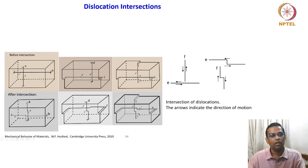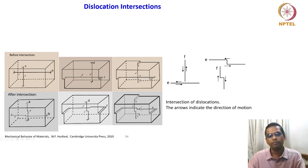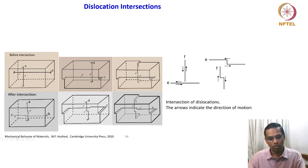This is before intersection and this is after intersection. As the intersection proceeds, you see that the jog created on E and F are shown here. They are not similar to the previous jog motion — their motion is not similar to the previous jog motion, as we will see why.